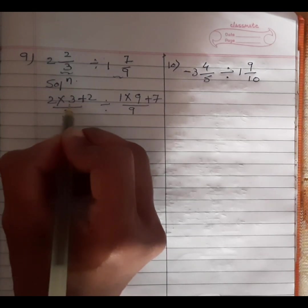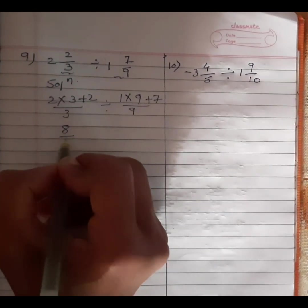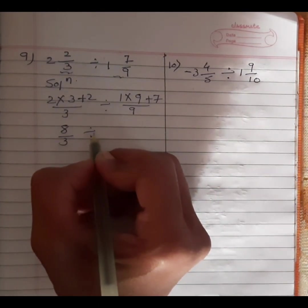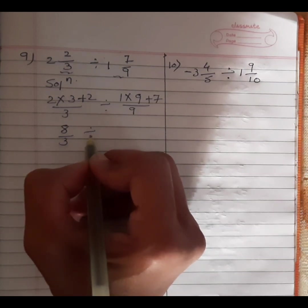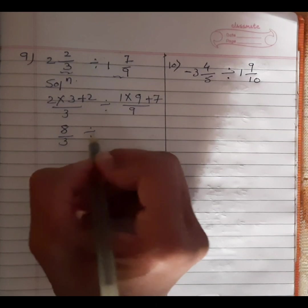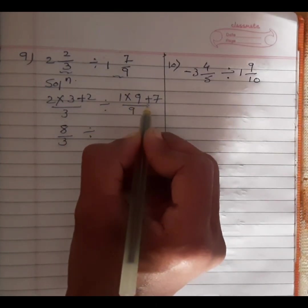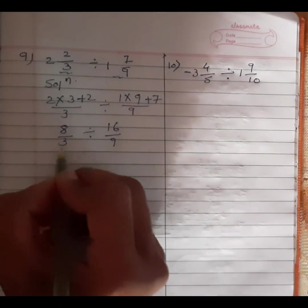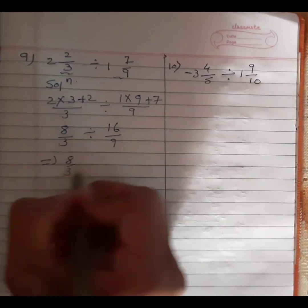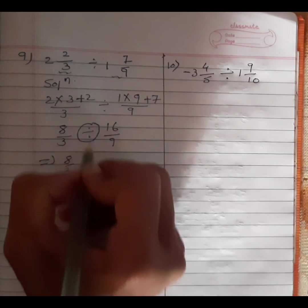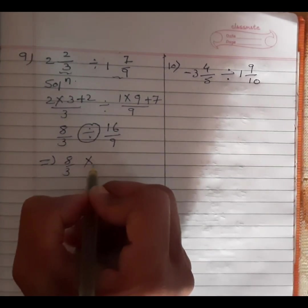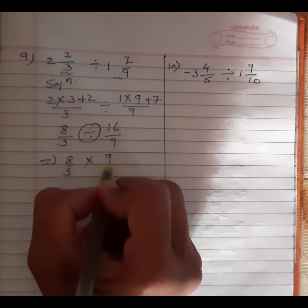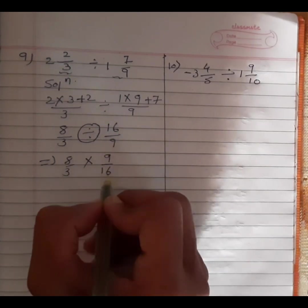Now, 3 twos are 6, 6 plus 2 is 8, divided by 3. And 9 ones are 9, plus 7 is 16, divided by 9. So in the next step, we write 8 by 3 with a multiplication symbol instead of division. Because we have to simplify the sum, and 16 by 9 will become its reciprocal, 9 by 16.